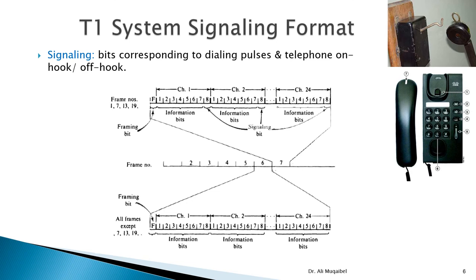In addition to framing bits, there is the concept of signaling bits. Signaling bits carry control information such as dialing pulses, on-hook/off-hook status, or other control bits. On-hook means the telephone is not in use; off-hook means it is busy. In our frame structure, there is no dedicated place for signaling bits — it's either framing bits or data.